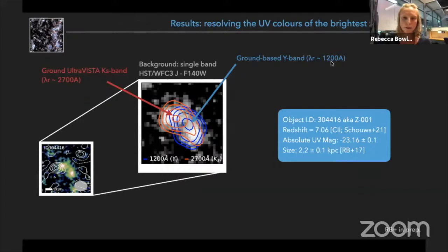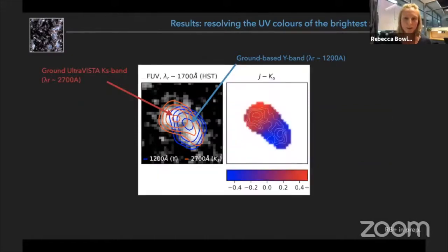So the blue contours here show you where the Y-band sits which is probing the far UV part of the spectrum, and the red contours show you where the ground-based K-band sits, which is a much redder UV probe. So you can see that there appears to be different centroids for these different wavelengths.